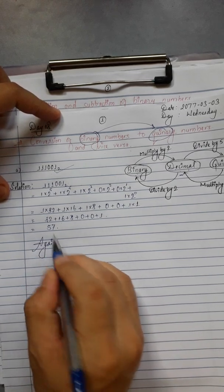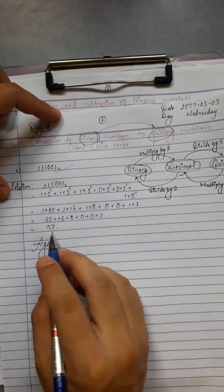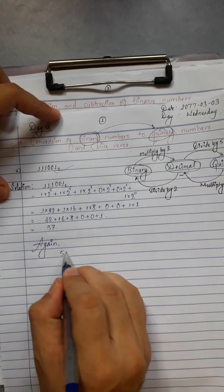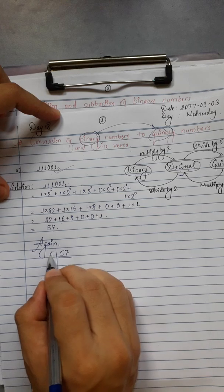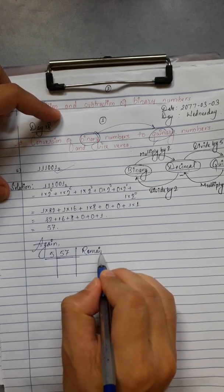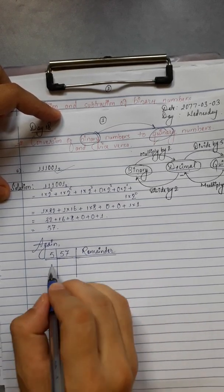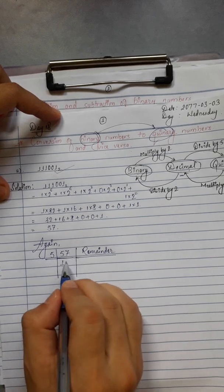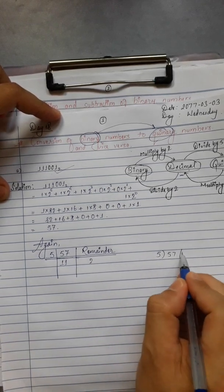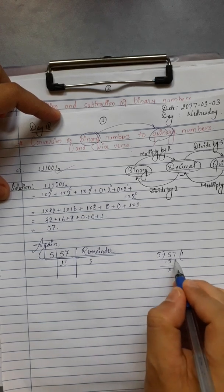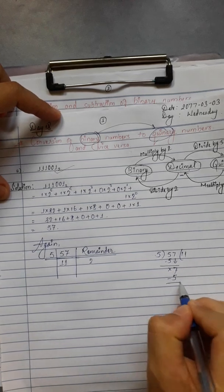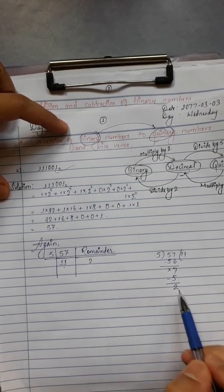Now converting decimal 57 to quinary — divide by 5. Follow these steps: 57 divided by 5. 5 goes into 57. 5 times 11 is 55, subtract — remainder is 2. Then 11 divided by 5: 5 times 2 is 10, subtract — remainder is 1.